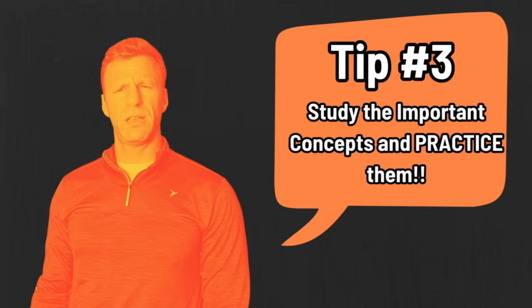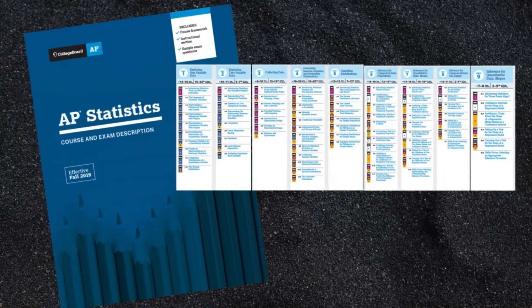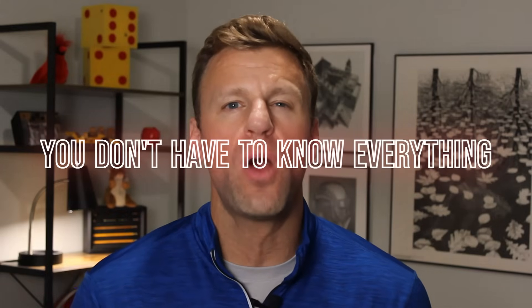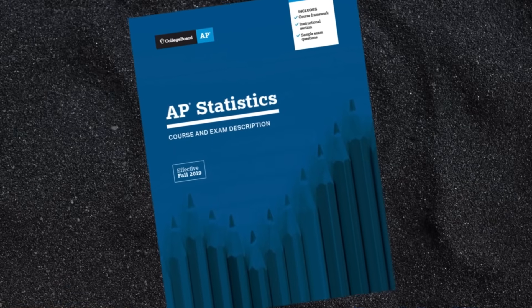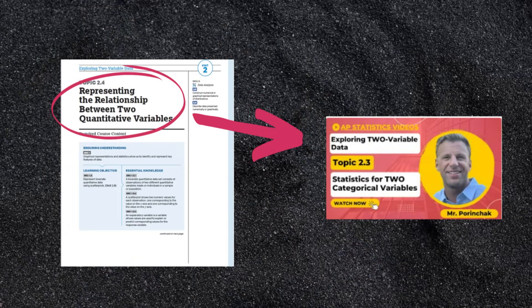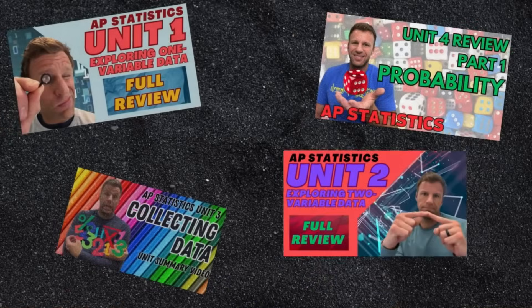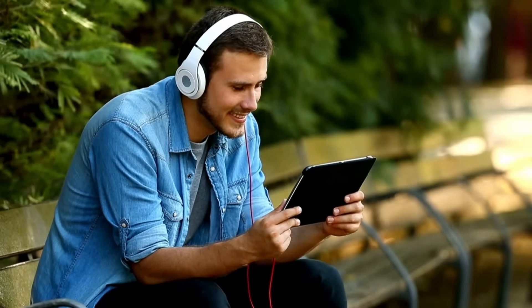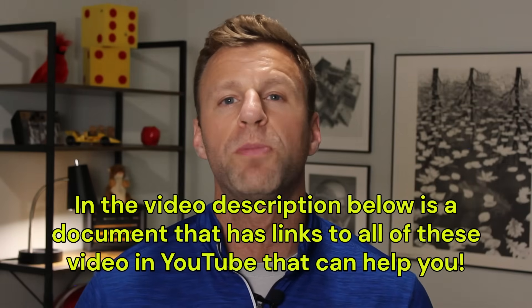Tip number three: study the important concepts and practice them a lot. The AP statistics curriculum is huge — nine enormous units with tons of topics. But you don't have to know every single thing to do well on the exam; you just have to know the really big important things. In the AP statistics course and exam description is everything that could possibly be asked on the exam. I went through that description, took out every single topic and main idea, and made videos that cover it all — including unit summary review videos that go over the most important things from each unit. Watching those videos will go a long way in helping you prepare.